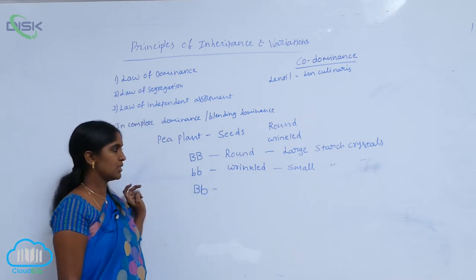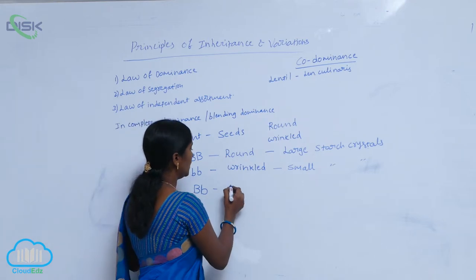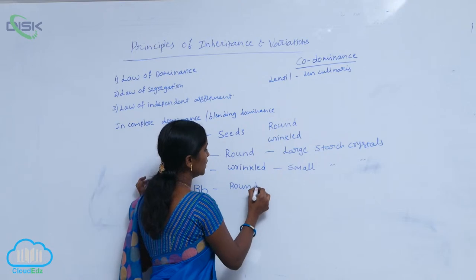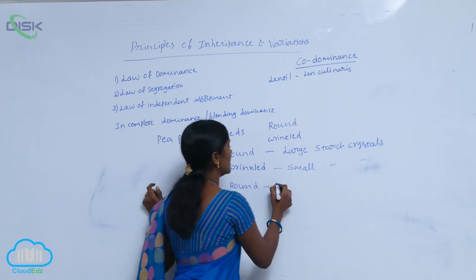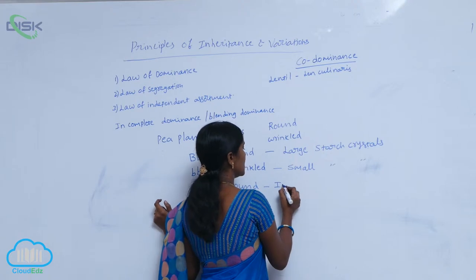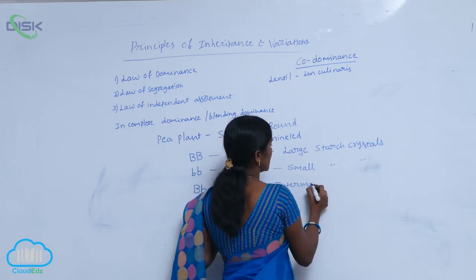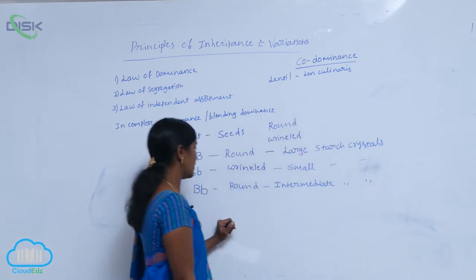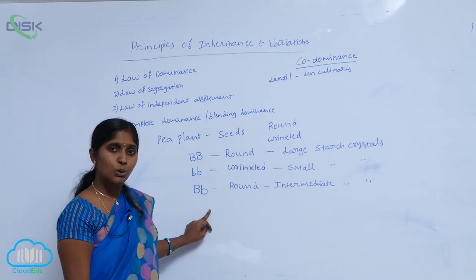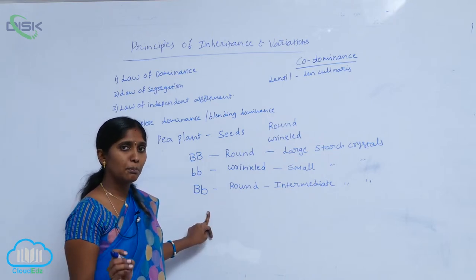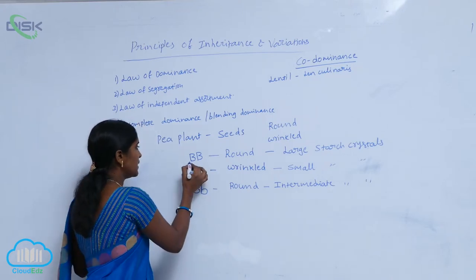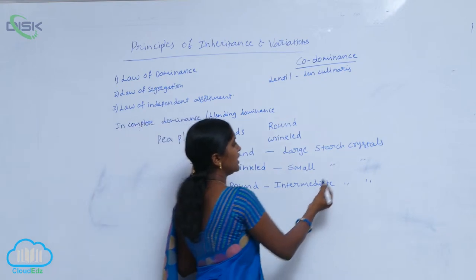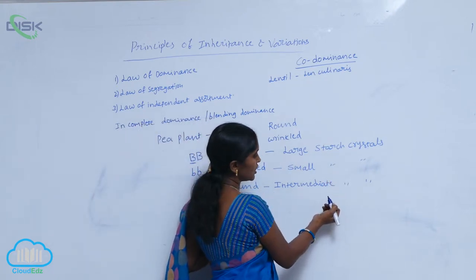But when the heterozygous form, that is the F1 hybrid represented as capital B small b, it gives a round seed. But the starch crystals released from the seed are of intermediate size. Intermediate size starch crystals are released from the round seed. So this is also one example of incomplete dominance. In the presence of capital B, it shows round shape, but the starch crystals show a difference.